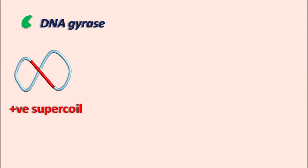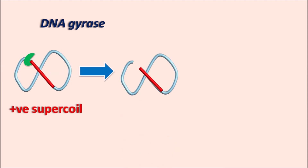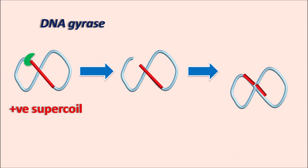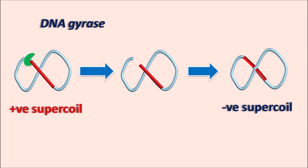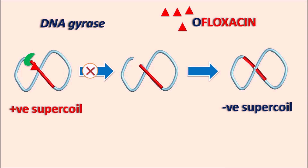The positive supercoil must be uncoiled to relieve strain so that DNA replication can occur, and for that DNA gyrase is required. DNA gyrase binds to the positive supercoil, cuts the DNA strand creating a nick, rotates the strand, and reseals it — converting it to a negative supercoil. In the negative supercoil conformation, bacterial DNA can undergo replication. Ofloxacin blocks this DNA gyrase enzyme, preventing formation of the negative supercoil and thereby inhibiting DNA replication.